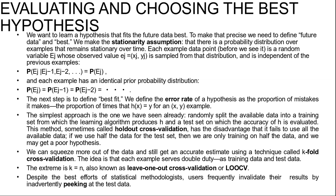The next step is to define best fit. We define the error rate of a hypothesis as the proportion of mistakes it makes — the proportion of times h(x) ≠ y for example (x, y). Just because a hypothesis h has a low error rate on the training set does not mean it will generalize well. A professor knows that an exam will not accurately evaluate students if they have already seen the exam questions. Similarly, to get an accurate evaluation of a hypothesis, we need to test it on a set of examples it has not seen yet.